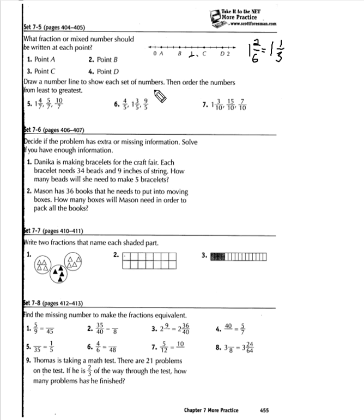Draw a number line to show each set of numbers, then order the numbers. I'll take this example, number seven, because they're all divided by 10. So we've got one and three-tenths. We've got 15 tenths, which actually, if you break it down, divide 10 into 15, comes out to 1.5. So that's actually one and five-tenths. And then we've got seven-tenths.